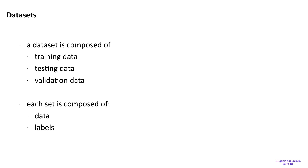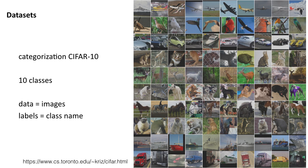Each set is composed of data and labels. For training data, we have lots of images and labels. A typical dataset used for prototyping in machine learning and deep learning computer vision is the CIFAR-10 dataset, which has 10 classes. Some of the images you see here include airplane, bird, car, cat, and so forth. The data are images and the labels are simply the class names.